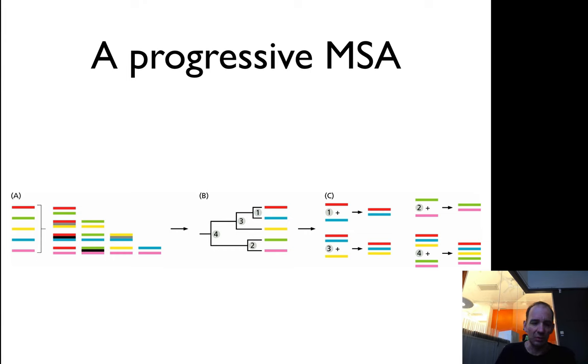You can use whatever algorithm you want to use. Then you start by taking the two most similar sequences. In this case it was the red and blue because they were most similar. You start aligning them, and then the second most similar are the green and the pink.